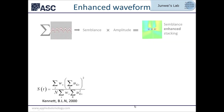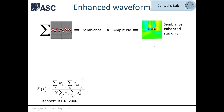With the travel time field available, the next step is to stack the waveform following the travel time table. The summation along the arrival time gives the amplitude, and we use a small window to calculate semblance — a measure of coherence across the traces. If the travel time matches the waveform you get high semblance; otherwise semblance is low. We use the semblance to weight the amplitude, resulting in a semblance-enhanced stacking for the final image.